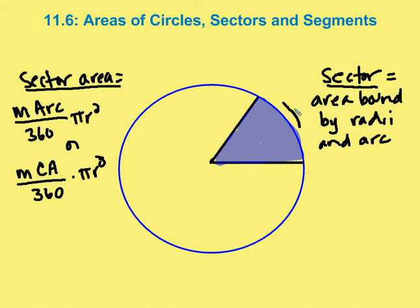We define a sector as the area — it's this little wedge here, or portion of an entire circle — bound by two radii and its corresponding arc. The way we figure out the area of the sector is we find the measure of the central angle as a fraction of 360, and multiply that times the entire area of the circle. That fraction of the circle times the total area gives us the area of the sector.